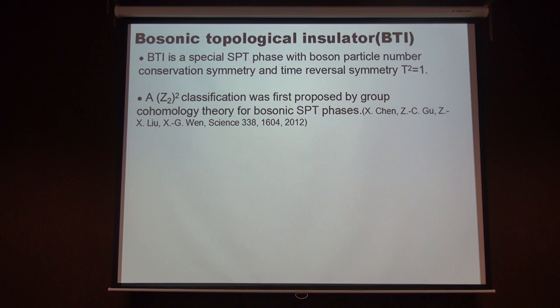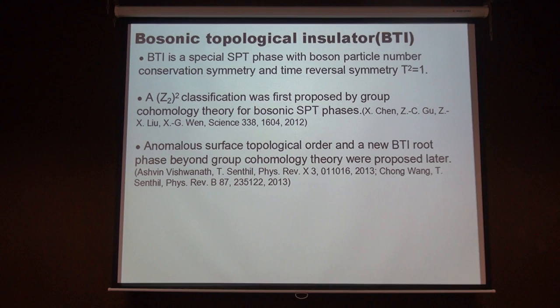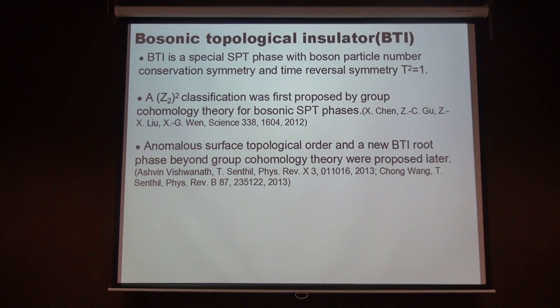For example in this Z2-squared phase: you pick one SPT phase from one Z2 and one from the other, stack them together, and you can produce a third — that is why there are three non-trivial phases. But it turns out the complete classification is Z2-cubed, which means there could be seven non-trivial phases. The missing non-trivial phase was first proposed by Senthil and Vishwanath based on a field theory approach, emphasizing the anomalous surface topological phase to characterize this three plus one dimensional SPT phase. Later, using the more advanced mathematics of cobordism, it was also confirmed that the classification is Z2-cubed.